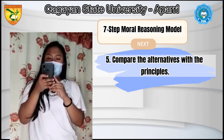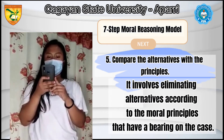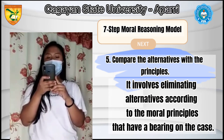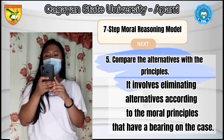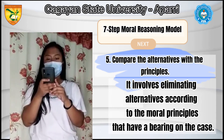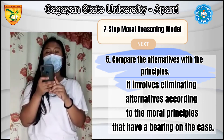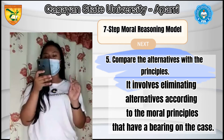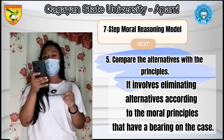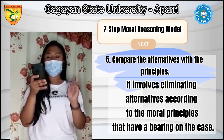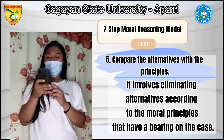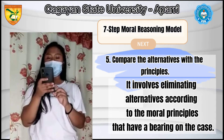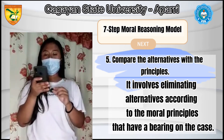Fifth, compare the alternatives with the principles. This involves eliminating alternatives according to the moral principles that have a bearing on the case. In many cases, the case will be resolved at this point since the principles will remove all alternatives except one. For example, call both sides involved in the rumors and tell them what solutions came to mind to settle their case. At this point, some conflicts are solved, but some are not because of misunderstanding.